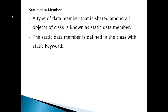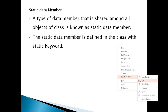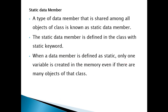Whenever we want to declare a data member as static, we must use the static keyword. When a data member is defined as static, only one variable is created in the memory location — and that is the main point — even if there are many objects for that class.